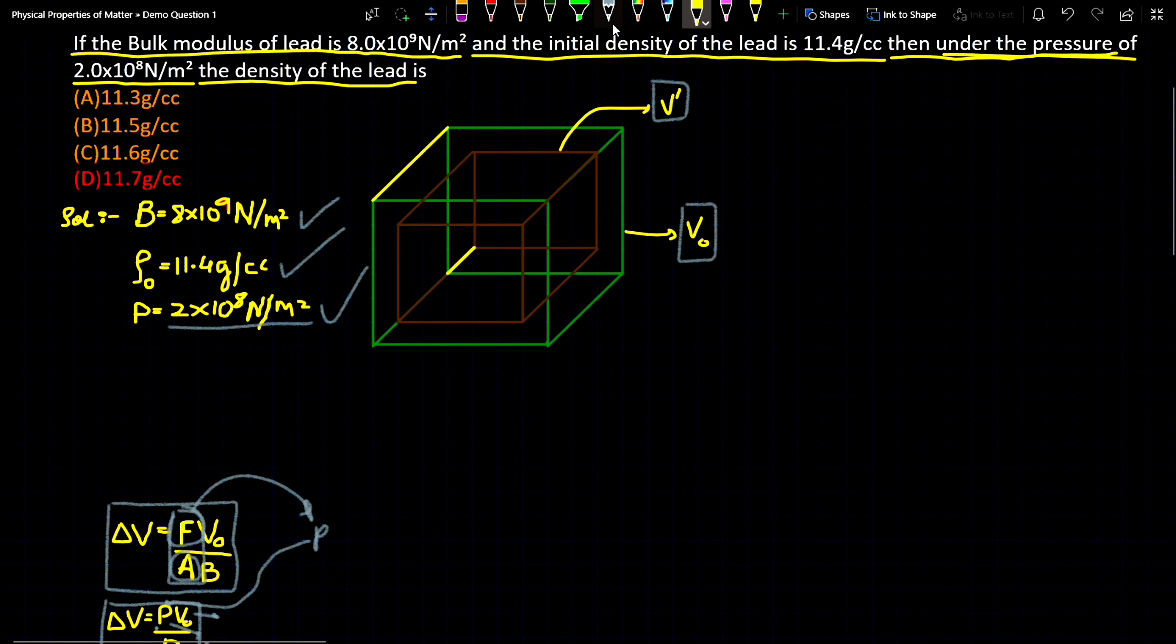The reason behind this is that when we apply pressure to any body, the volume of that body decreases. Likewise when we apply pressure, that green box and this brown box - you can clearly see that the volume is decreasing because we have applied pressure from outside.